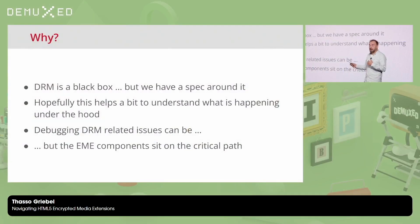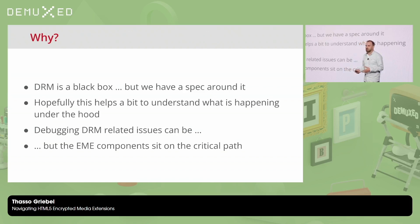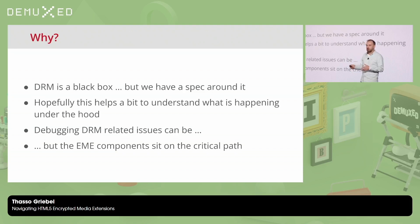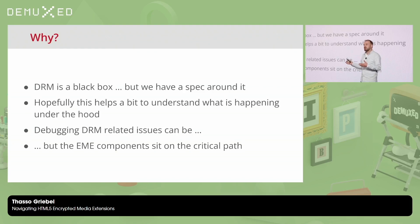The reason why I submitted this talk is that DRM, especially in browsers but pretty much on all devices, is kind of a black box. For engineers working with video systems that deploy DRM, it can be very helpful to understand, at least to some degree, what's happening under the hood. This is something that in the browser space is possible because we have a proper specification for it. The DRM system in the browser goes through Encrypted Media Extensions, and this is properly specced, so you can look up some things.